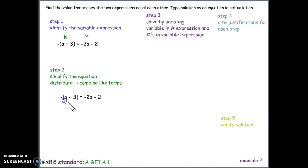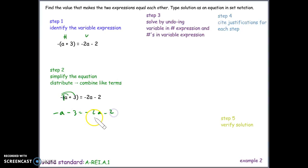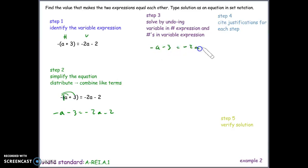There is a negative on the outside of parentheses that we can distribute. A lone negative is actually negative one — we don't write the one because of the Multiplicative Identity. Multiplying negative one through the parentheses: negative one times a gives negative a, and negative one times positive three gives negative three. There are no like terms on the right side, so nothing more to simplify.